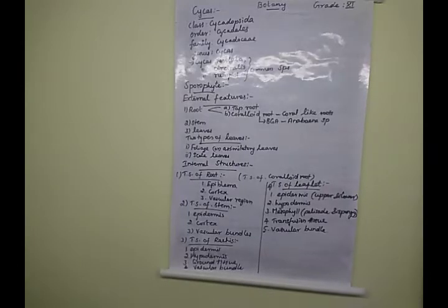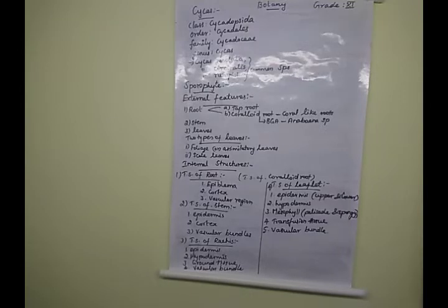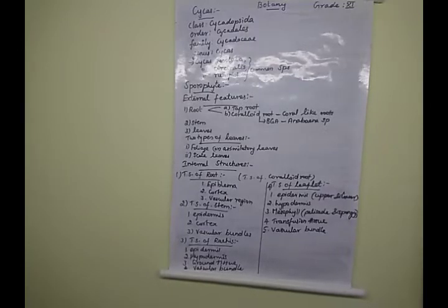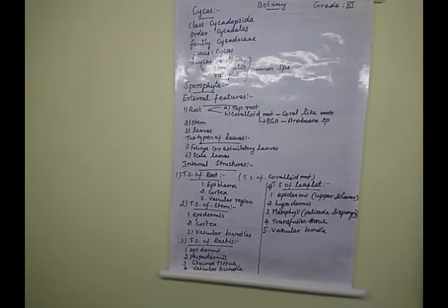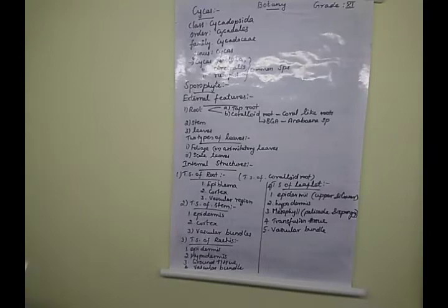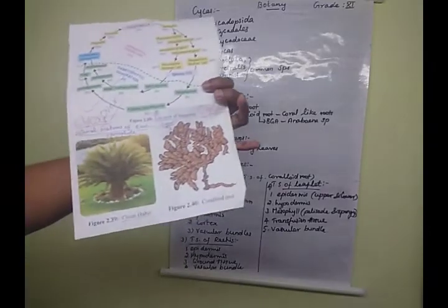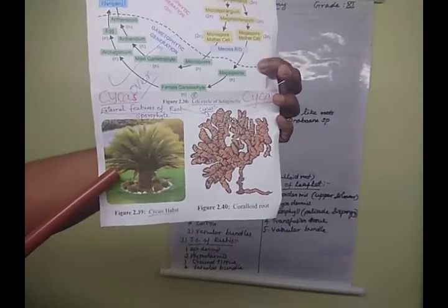This is the overall view of the external features of the root. The next one is the stem. We are going to learn about the external characteristic features of the stem. This is the example of a Cycas plant showing the stem region.